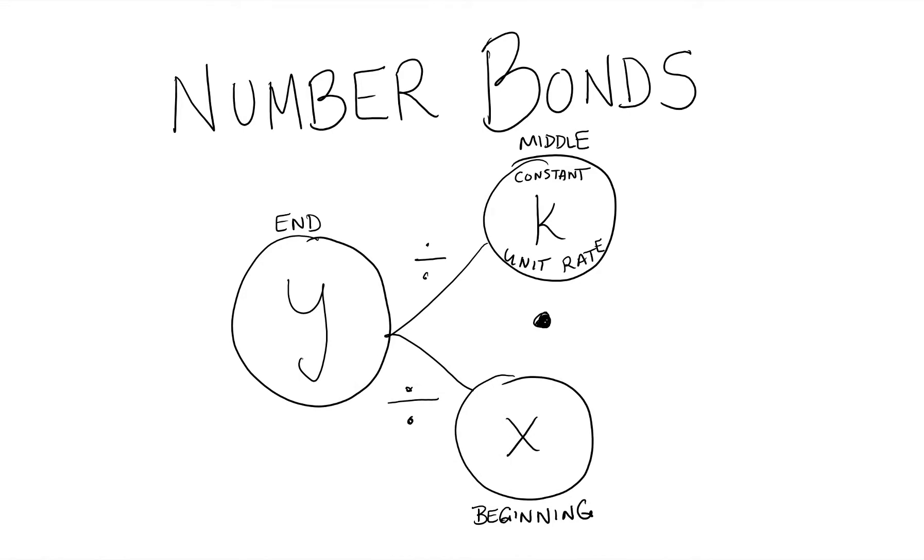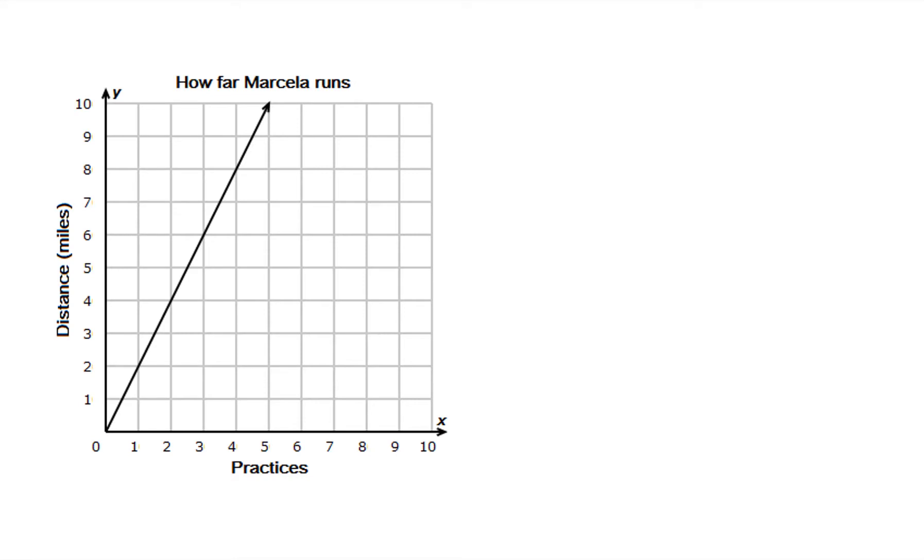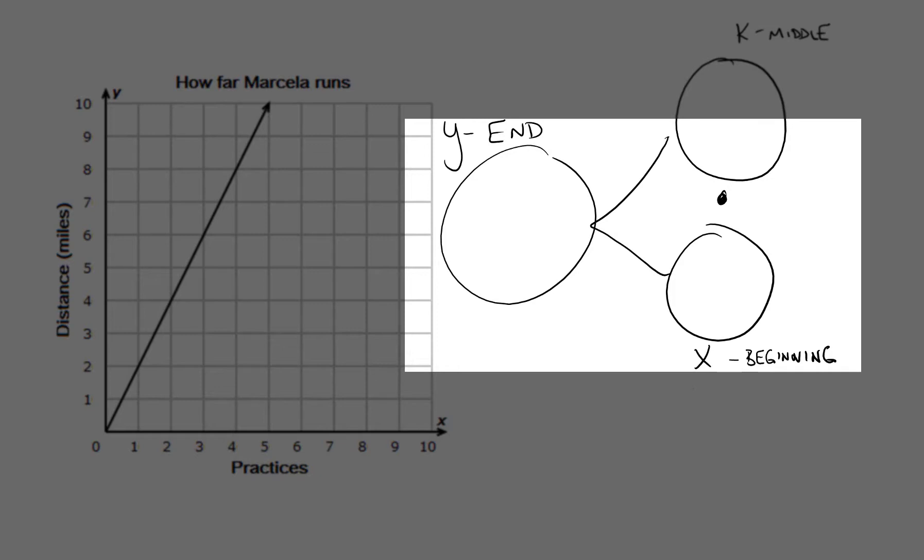Watch how easy this becomes with all the different types of graphs that I'm going to show you. For any graph that we have, we're going to set up our number bond the exact same way each time. We're going to have a beginning, we're going to have a middle, and we're going to have an end.